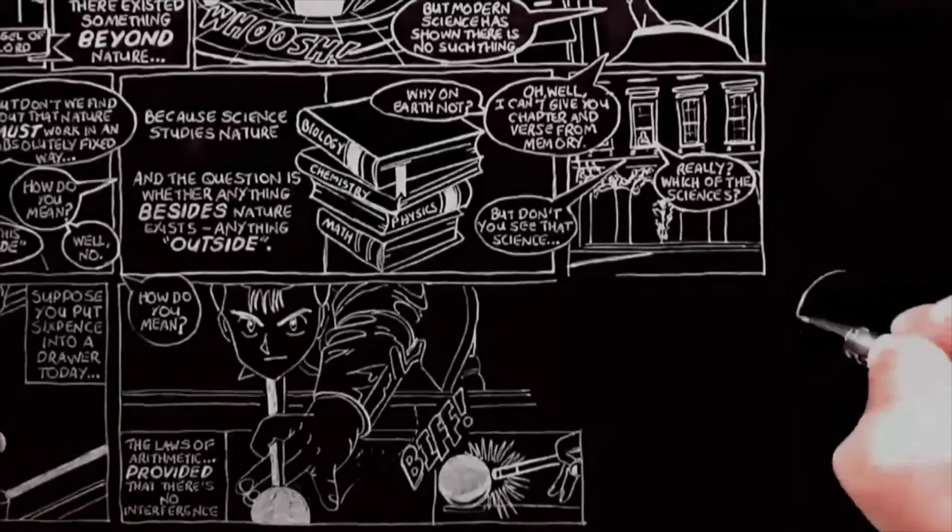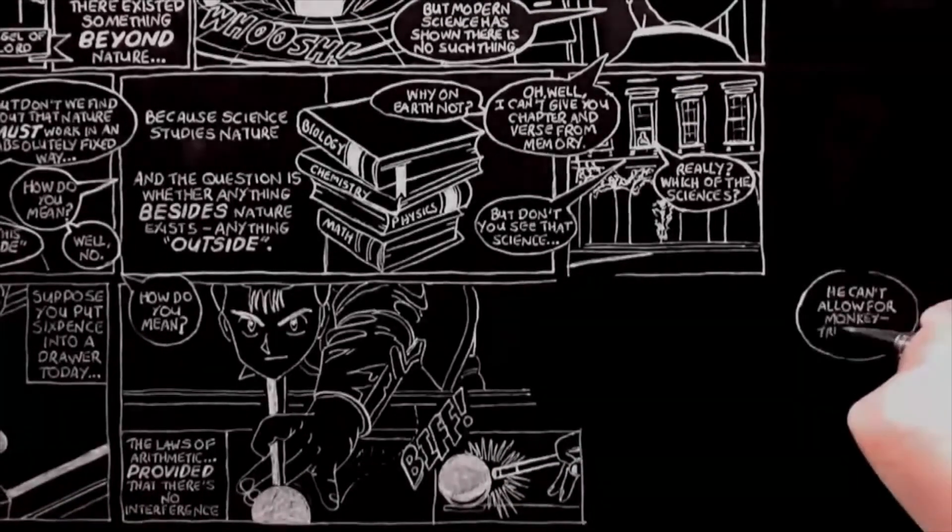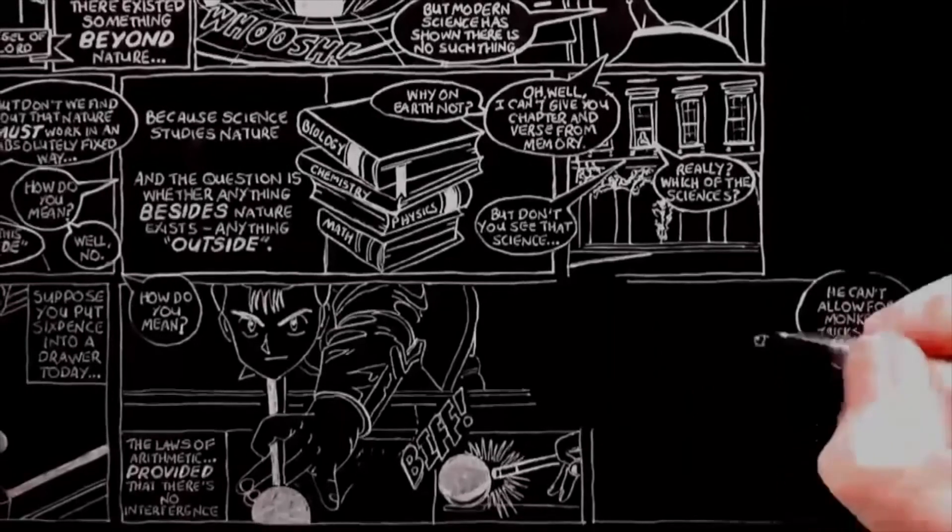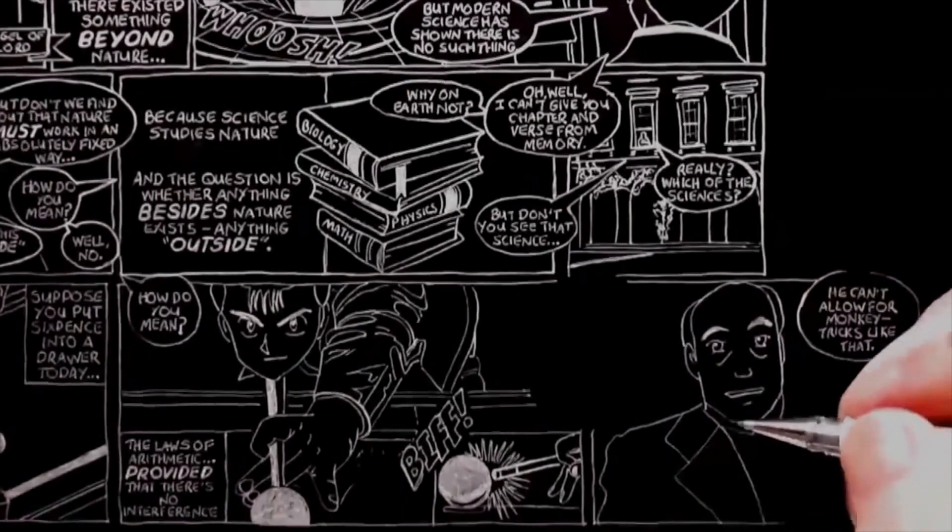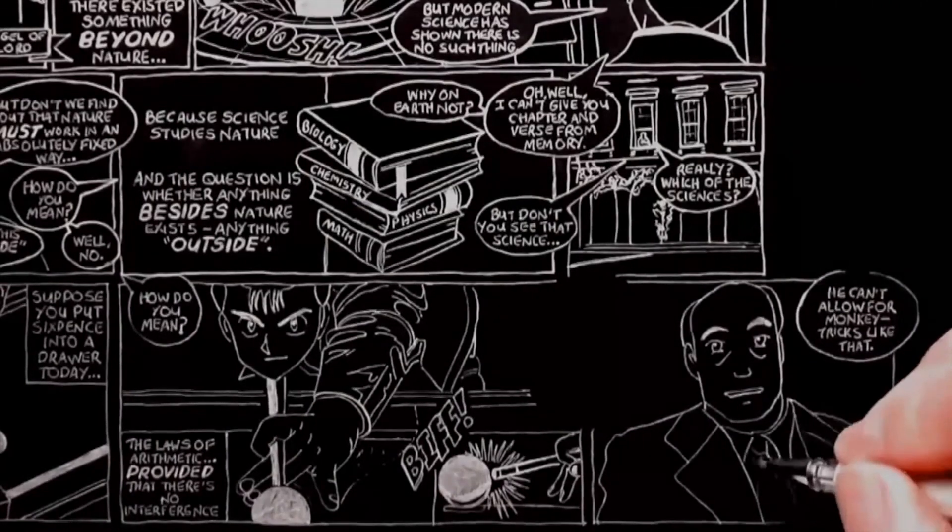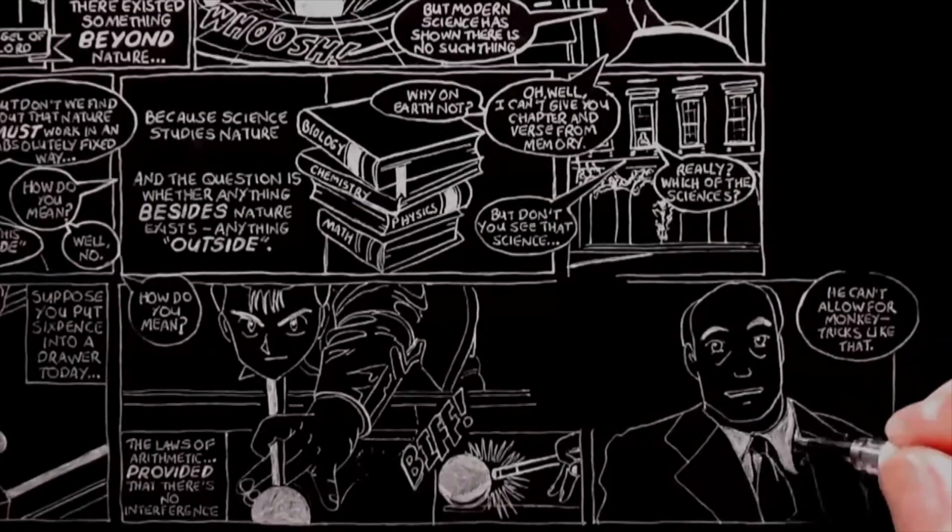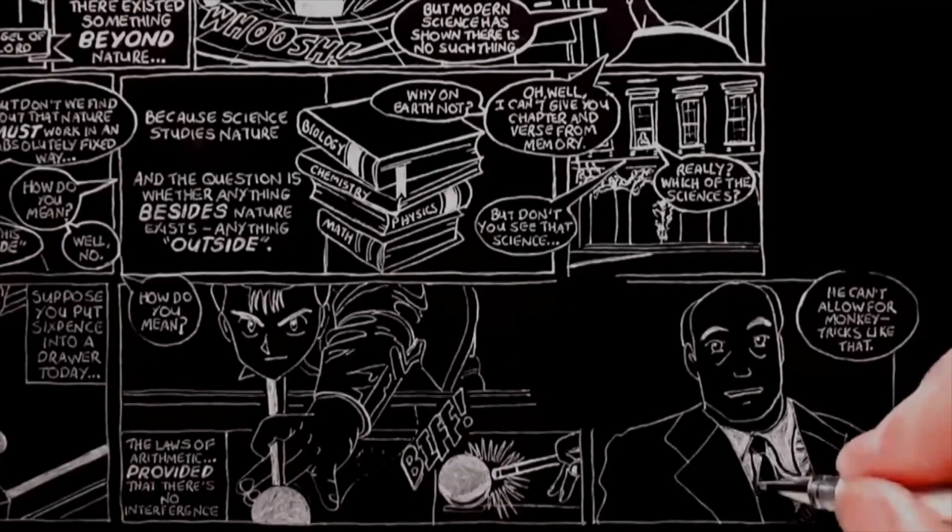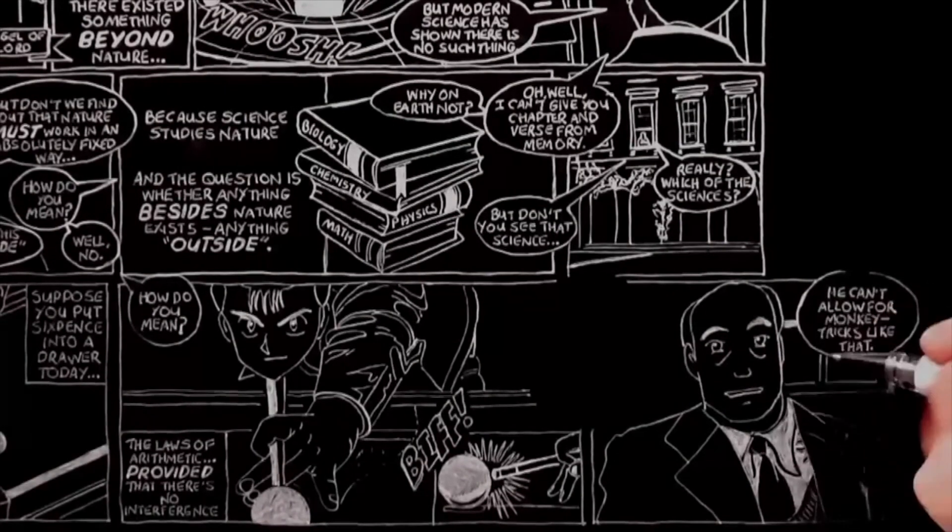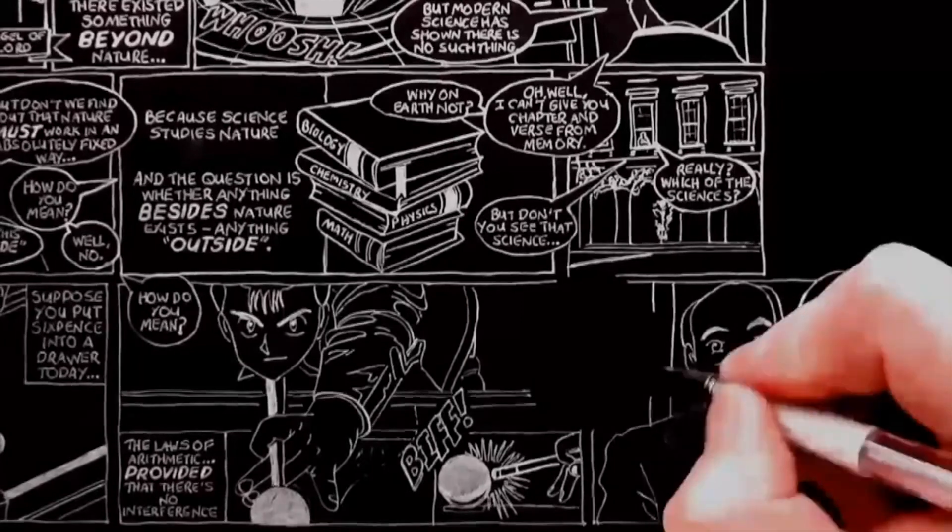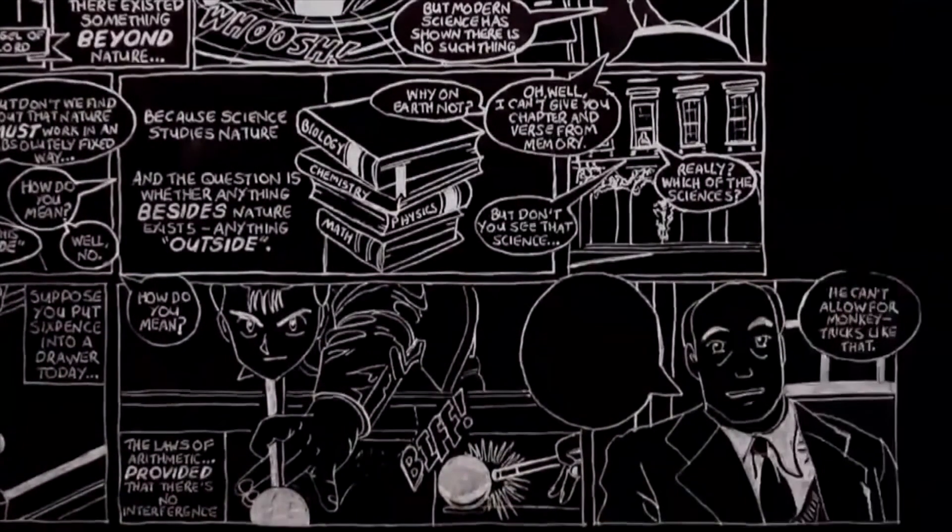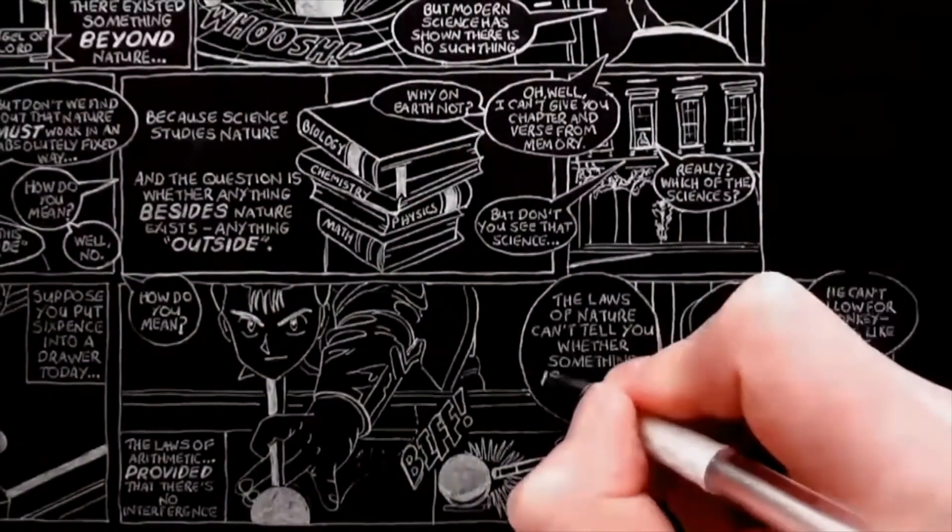If, after it's already in motion, someone snatches up a cue and gives it a biff on one side, why then, you won't get what the scientist predicted. Well, no, of course not. He can't allow for monkey tricks like that. Quite. And in the same way, if there was anything outside nature, and if it interfered, then the events which the scientist expected wouldn't follow. That would be what we call a miracle. In one sense, it wouldn't break the laws of nature. The laws tell you what will happen if nothing interferes. They can't tell you whether something is going to interfere.